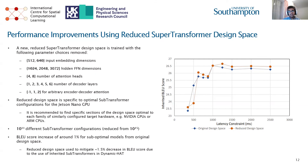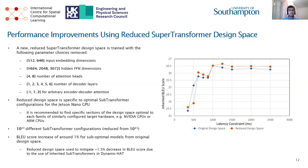However, training a separate super transformer for every single target hardware device would reverse the benefits of HAT. The recommended approach is to use one super transformer with a very large design space, identify the optimal section of its design space for the target hardware, and then perform an evolutionary search on this subsection to find sub-transformer configurations for different latency constraints. We can have different optimal design spaces for families of hardware such as NVIDIA GPUs or low-power ARM CPUs.